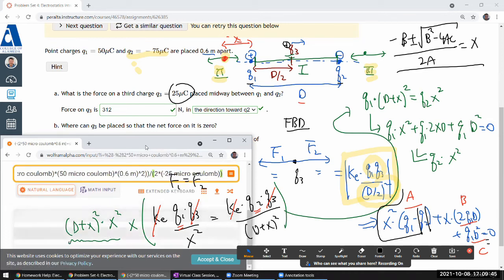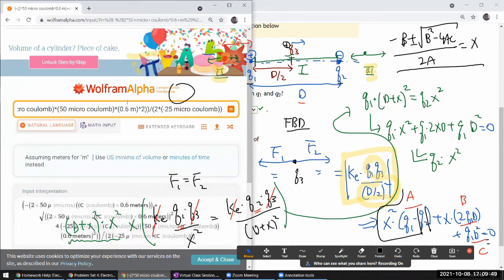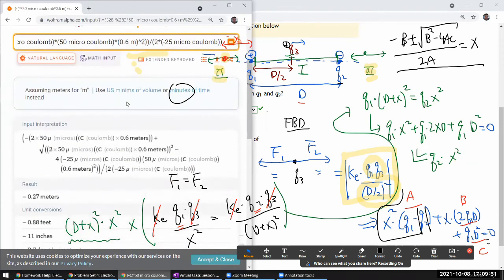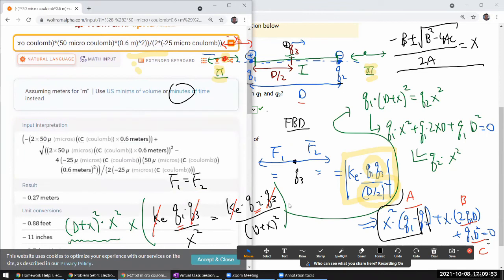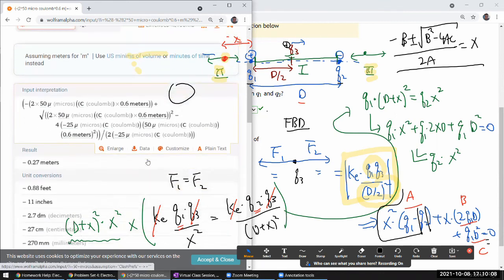All right, I think I got most of it. Oh, and divided by two a. So two times a, 25 microcoulombs, minus 25, 50 microcoulombs minus 75, or I guess that's what I had to be, minus 25 microcoulombs. All right, let's see what we get. First I have to double check to make sure that Wolfram Alpha interpreted me correctly.